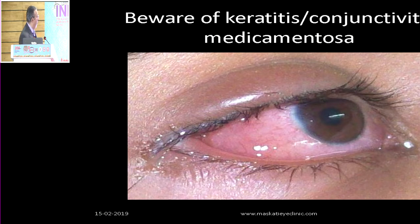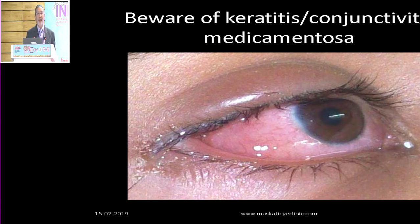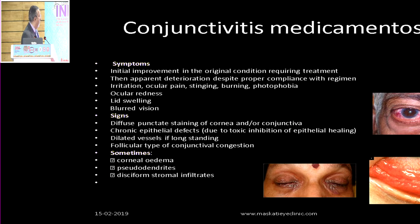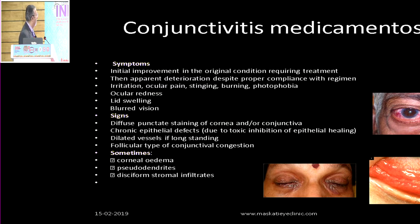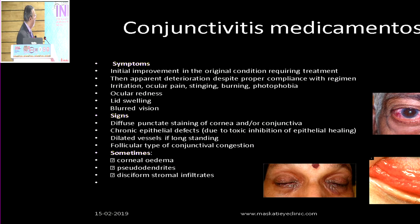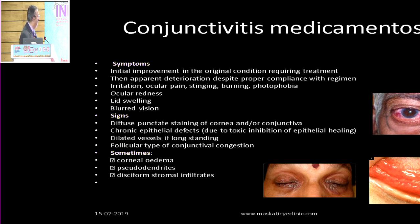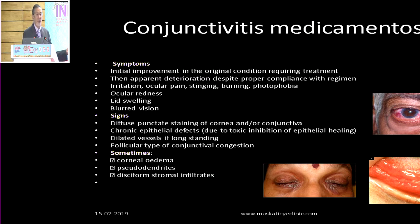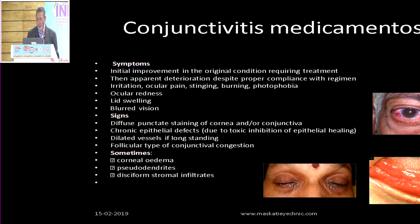I had a patient with chemosis; this angry red eye was waxing and waning for 15 days on all sorts of treatment. Symptoms of conjunctivitis or keratitis medicamentosa include initial improvement followed by apparent deterioration — redness, lid swelling, blurred vision, chemosis, and if it becomes keratitis medicamentosa, punctate staining and chronic epithelial defects. There should be nothing like a chronic conjunctivitis that is not improving. Just stop antibiotics, add lubricants, and the patient usually gets better.